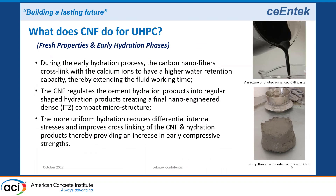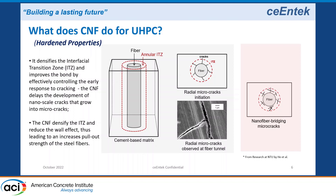I want to focus on what carbon nanofiber does for UHPC in both fresh and hardened properties. During the early hydration process, the carbon nanofiber cross-links calcium ions to have higher water retention, extending the working time and holding the fluid better in the matrix. In the hardened state, it regulates hydration into a nano-engineered dense interstitial microstructure. It also densifies the interstitial zone next to the aggregate, sand particle, or microfiber, causing a higher bond to the steel fiber or sand particle.